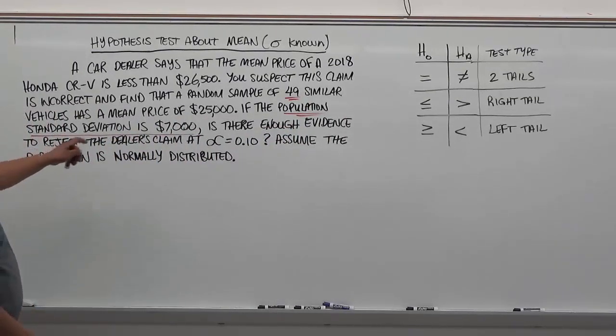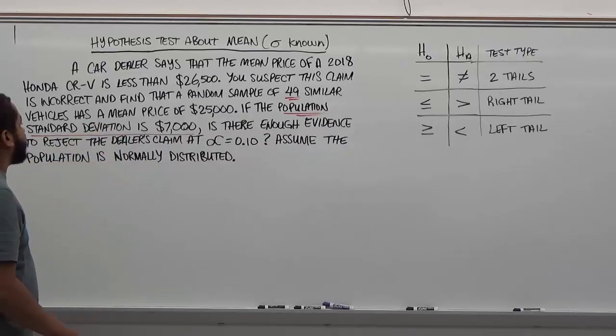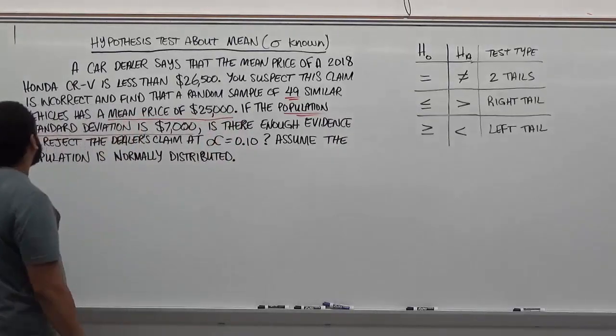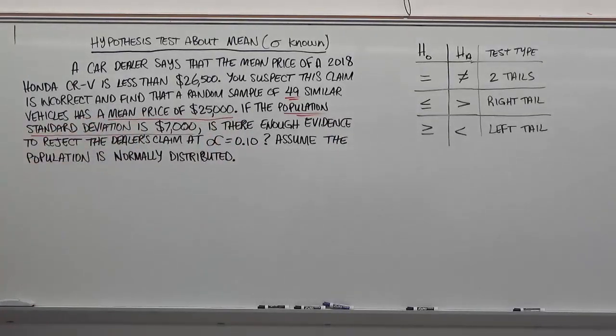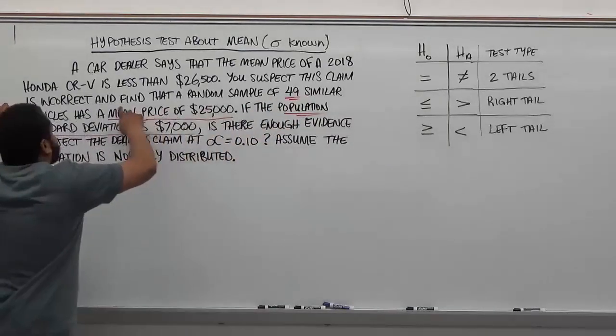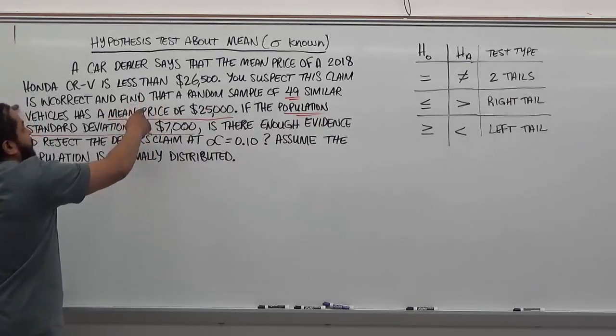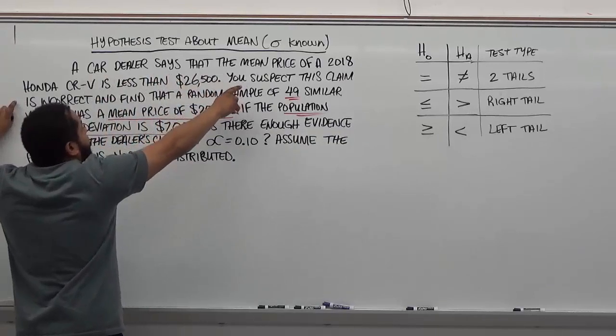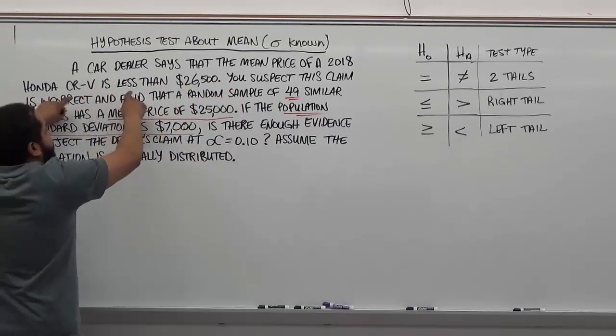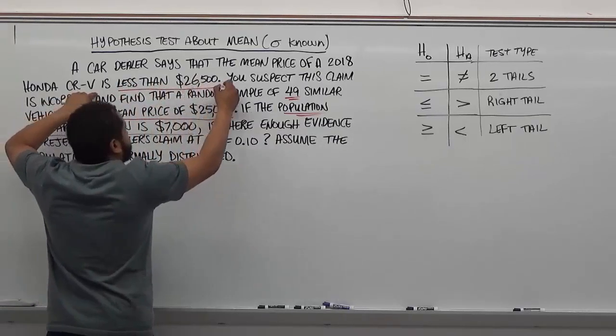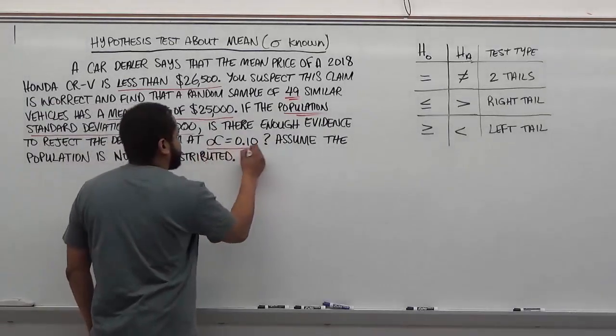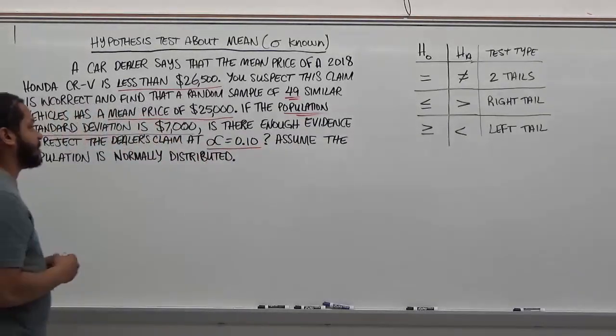This is easier because we're not using T-scores. We know the sample mean price is $25,000 for the vehicles. There's also a claim in here. The claim they're talking about is what the car dealer is saying, that the CRV is less than $26,500. We're going to test this claim at the significance level of 0.10, which is 10%.